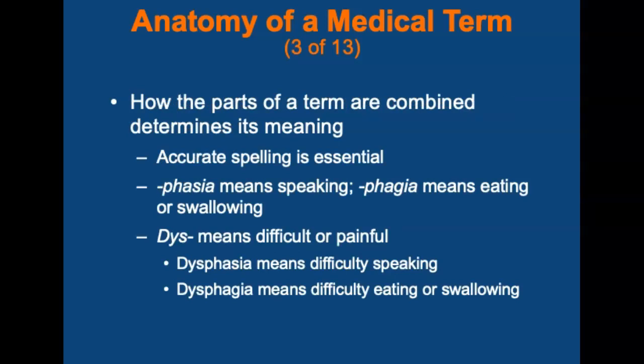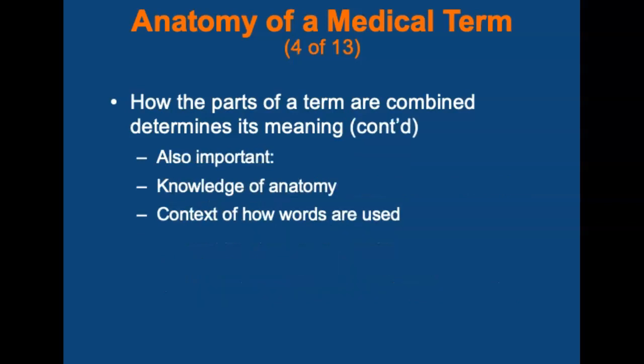Accurate spelling is essential in medical terminology. The suffix '-phasia' means speaking, whereas '-phagia' means eating or swallowing. The prefix 'dys-' means difficult or painful. So dysphasia means difficulty speaking, whereas dysphagia means difficulty eating or swallowing. The terms ilium and ileum are pronounced exactly the same but refer to different anatomical parts. Knowing anatomy and the context in which these words are used helps you correctly determine and spell the term in a given situation.